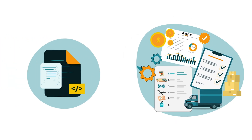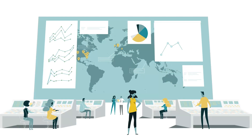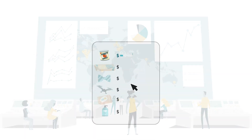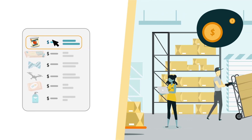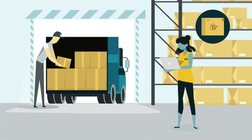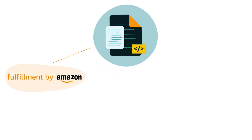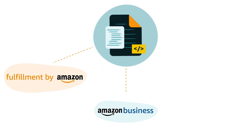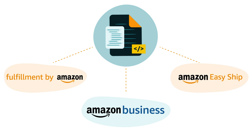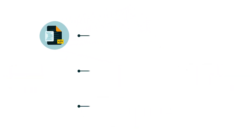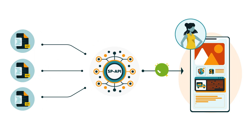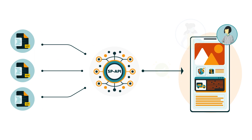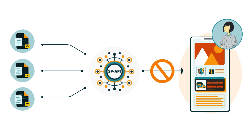Feeds and bulk actions allow sellers to streamline various selling activities, including listing, managing inventory and prices, and fulfilling orders. We also offer feeds for Fulfillment by Amazon (FBA), Amazon Business, and Easy Ship. All feeds available through SP API are designed for seller applications — they're not intended for use with vendors.